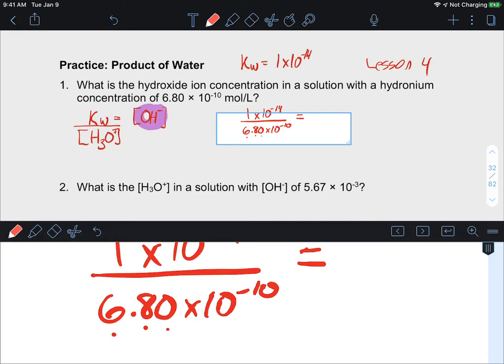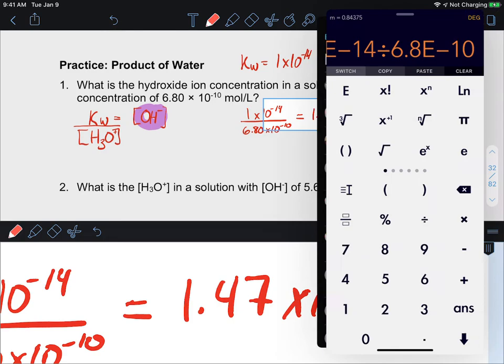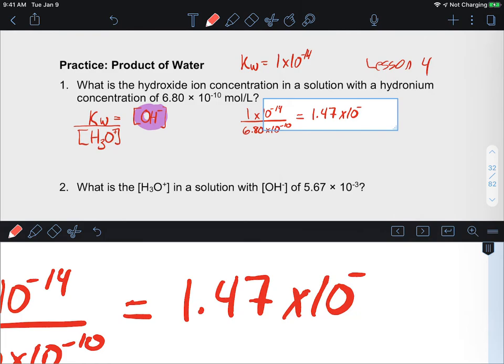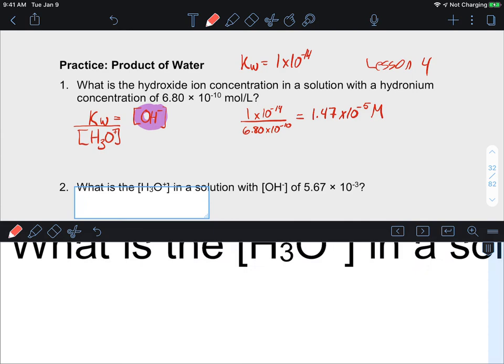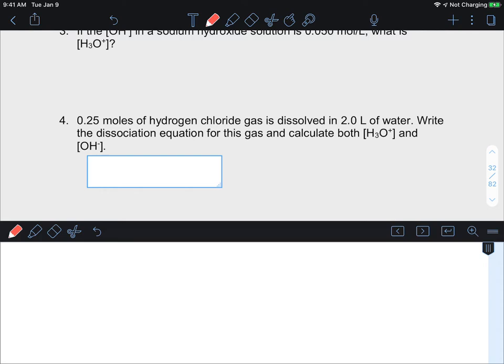This is a constant, so we don't have to consider the significant figures of this value. It is a constant, so that value will be as many significant figures as you want. We are only going to be looking at one, two, three significant figures from our given value, and the value is 1.47 times 10 to the negative five in moles per liter.